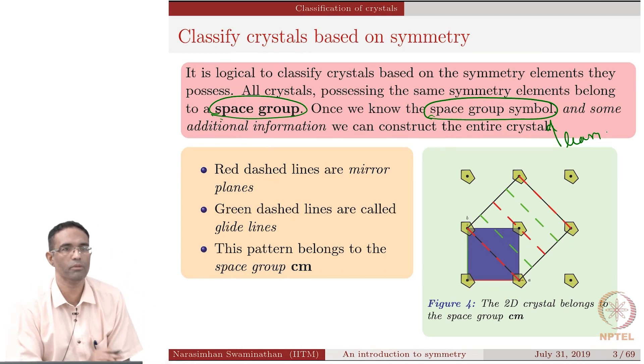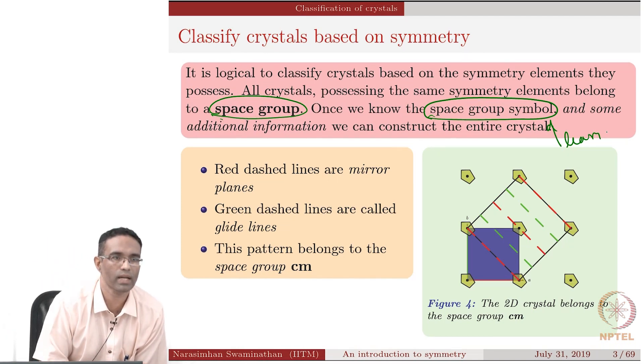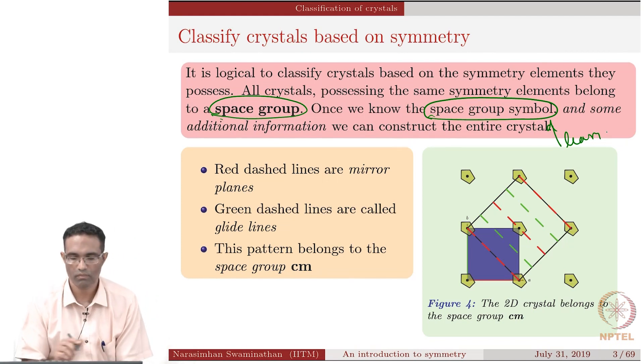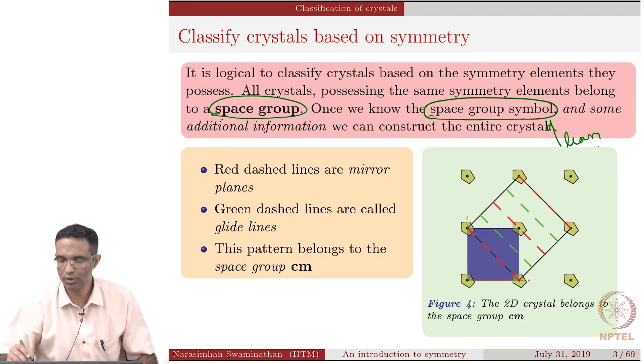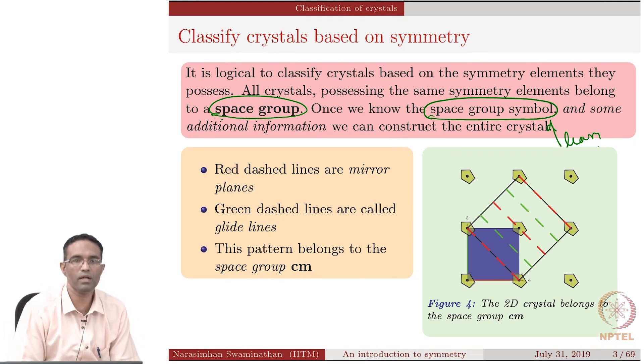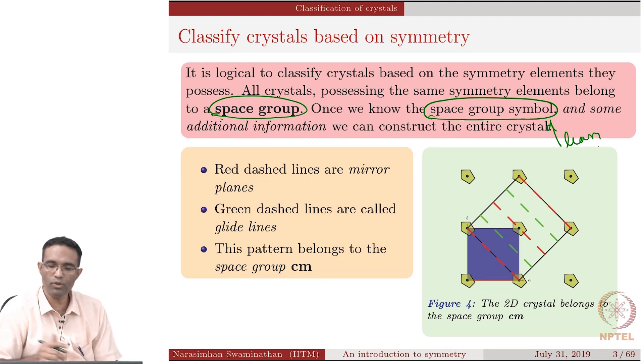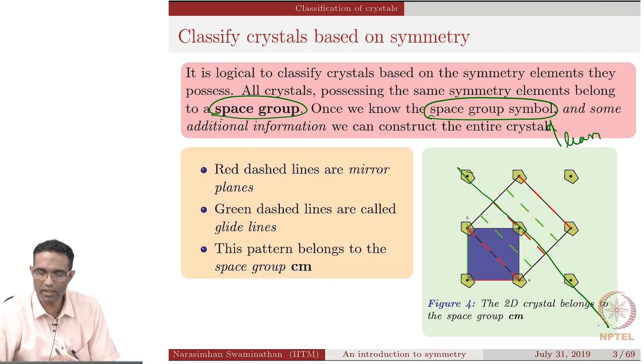The remaining couple of lectures are going to be focused on seeing how we can actually do that. Now what are the symmetry elements actually present in this plane crystal? If you take a careful look at it, if I repeated in all the, like a couple more, if I add a couple more like that, then you see additional symmetry elements basically appearing. Obviously, you have a mirror plane like this, but then you have something else also.